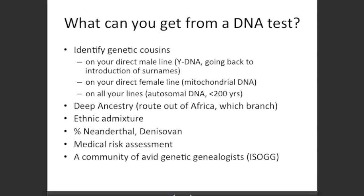You can also find out your deep ancestry — the routes that your ancestors took out of Africa 60,000 years ago. Some people are interested in that, though it's not particularly relevant for one-name studies, but it makes for interesting cocktail party discussion. You can look at ethnic admixture, much more popular in the United States. You can look at what percent Neanderthal you are, and you can also have a medical risk assessment if you test with 23andMe.